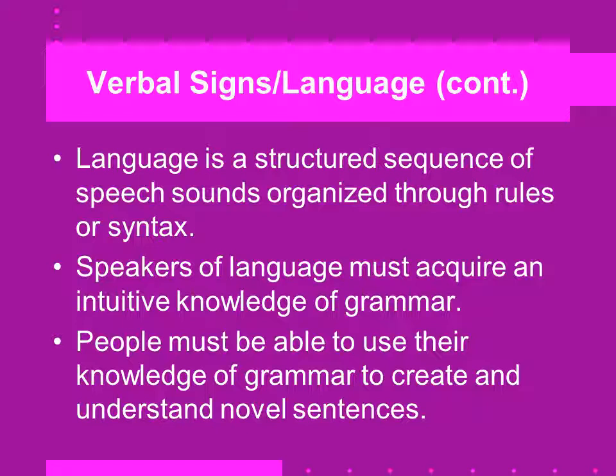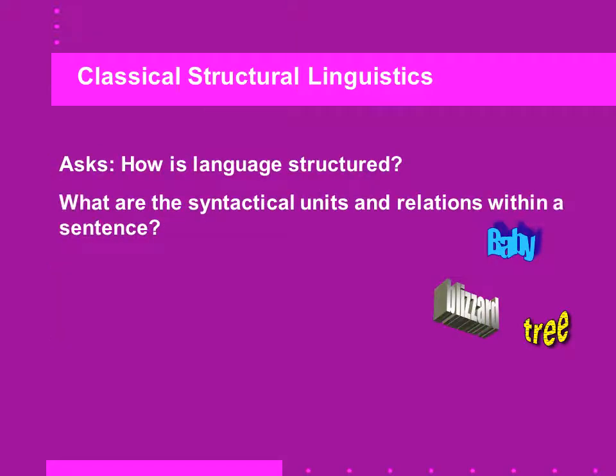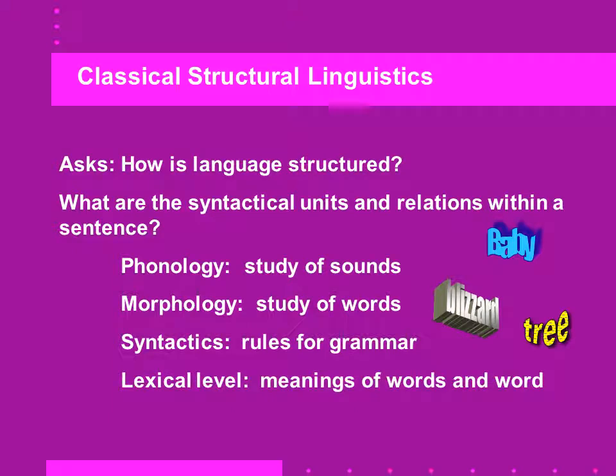People must be able to use their knowledge of grammar to create and understand novel sentences. So if everything was reinforced in Skinnerian — B.F. Skinner — stimulus-response fashion, through positive and negative reinforcement conditioning, how is it that we are able to create novel sentences we've never thought of or spoken before? It's kind of like the chicken-egg dilemma: which came first, innate language or learned language? There's no clear-cut answer, but it's worth considering that we did acquire it somehow.